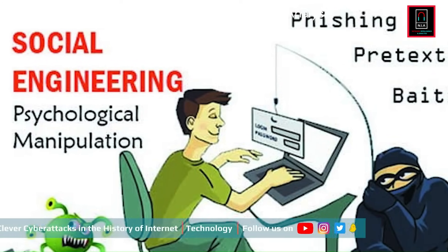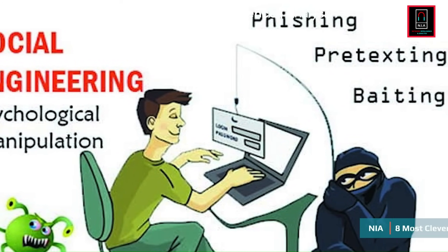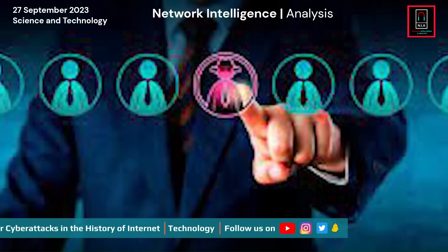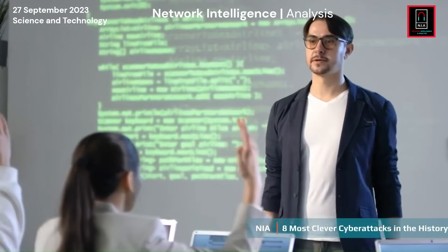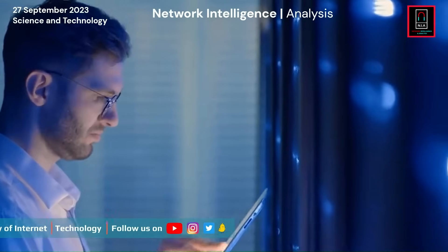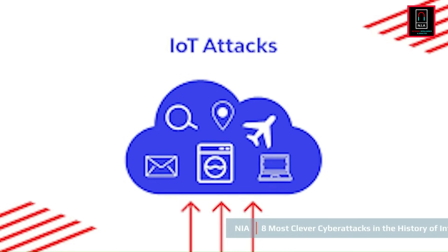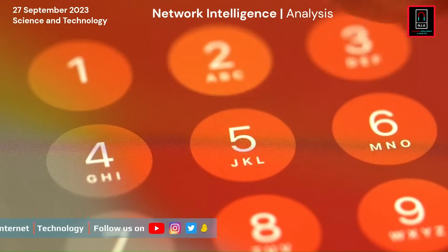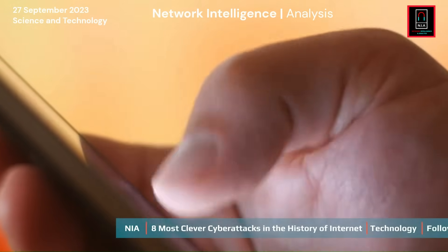Social engineering can include pretexting — creating a fabricated scenario to obtain information — or baiting, enticing victims into clicking on malicious links. Insider threats involve individuals with authorized access who pose significant risk, whether through accidental data mishandling or malicious intent. IoT attacks exploit vulnerabilities in connected devices, which often lack strong security measures and can serve as entry points into larger networks.